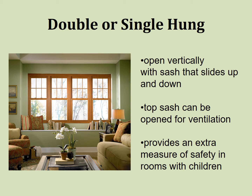Next we have double or single hung windows, which open vertically with the sash sliding up and down — as opposed to sliding or gliding windows that go left and right. Single or double hung windows actually provide a measure of safety in rooms with children, because children may not be able to push the sash up or pull it down. On top of that, many of these come with locking mechanisms that are very hard for children to reach and manipulate.